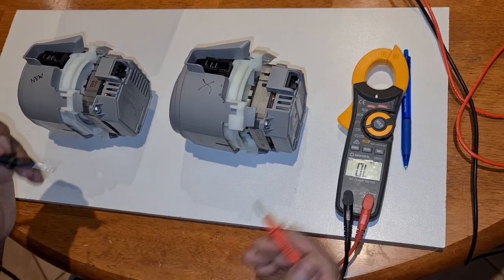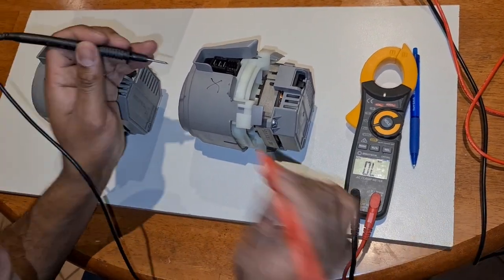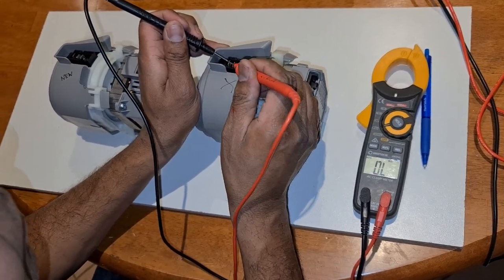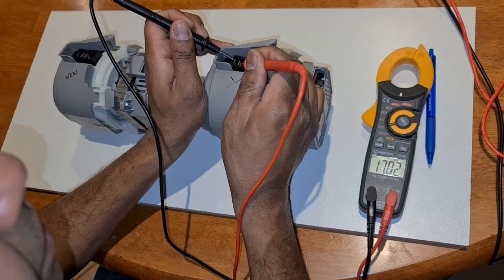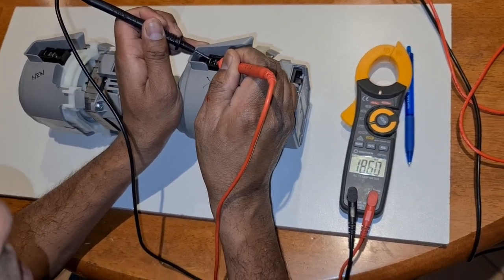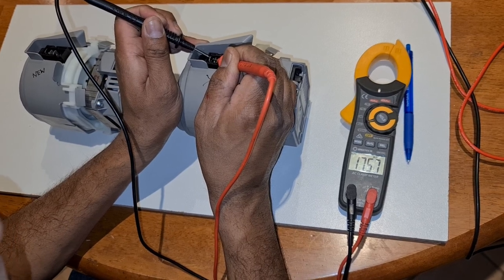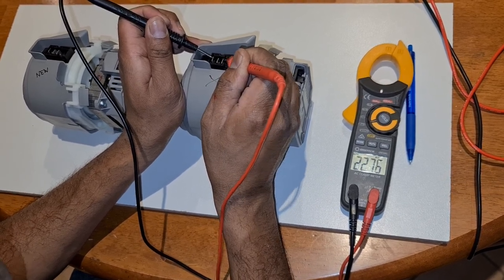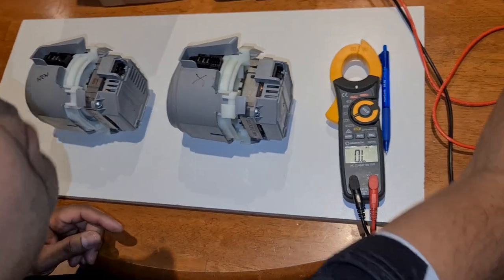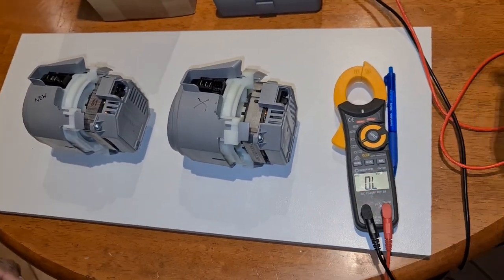So sometimes people do a mega test with a multimeter going from earth to the live terminal. And they take a reading and say, you know what, that's okay. 17 and a half meg, it should be fine. But this bad one is actually tripping the circuit breaker.